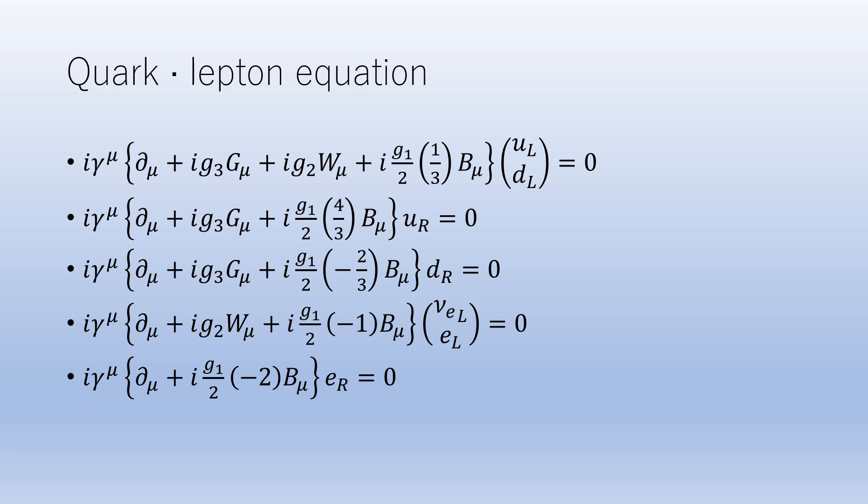If you take a closer look at all the equations, you will notice an important fact. There is no mass term in any equation. To have direct mass, both left-handed and right-handed chirality are required.